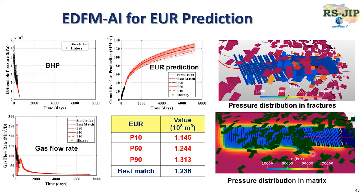The next benefit of EDFM-AI is better EUR prediction. We can give you P10, P50, P90, and your best match. That's more reliable than a single EUR prediction. You can compare this EUR prediction with decline curve results — our EUR prediction is based on a more realistic physical model. We can also give you different fluid saturation visualization in the fracture and matrix to understand the drainage area.